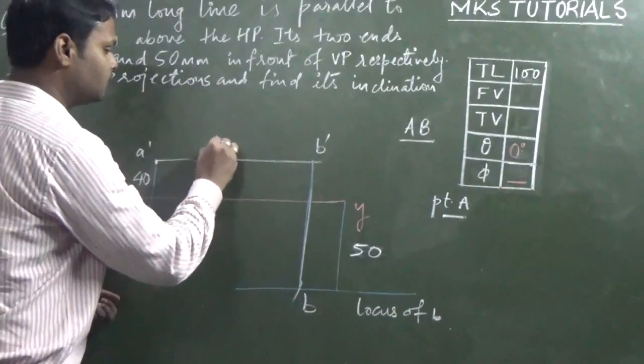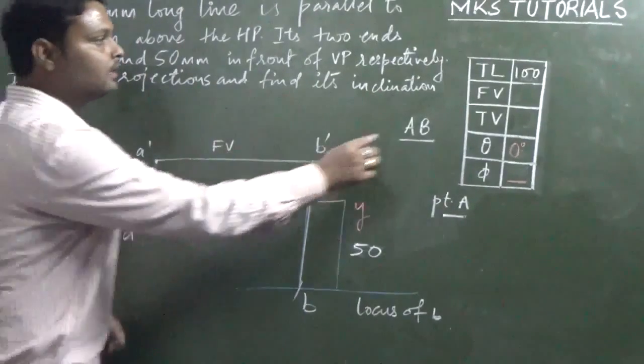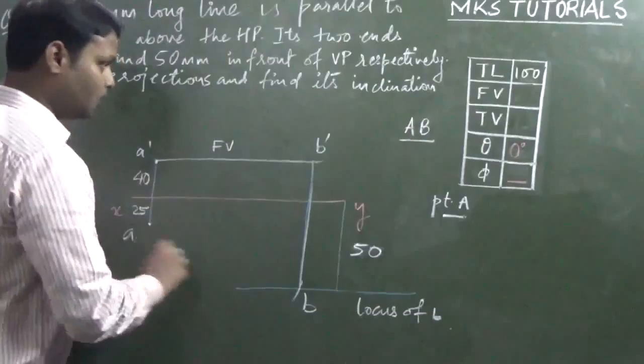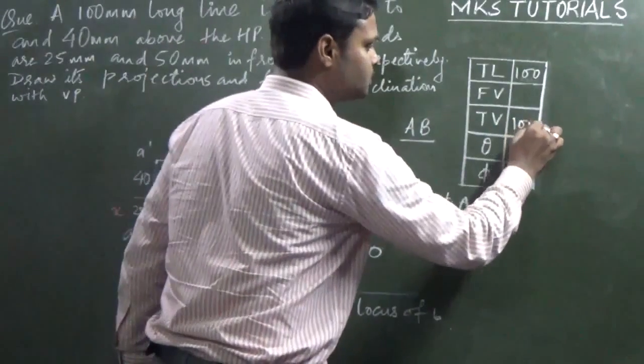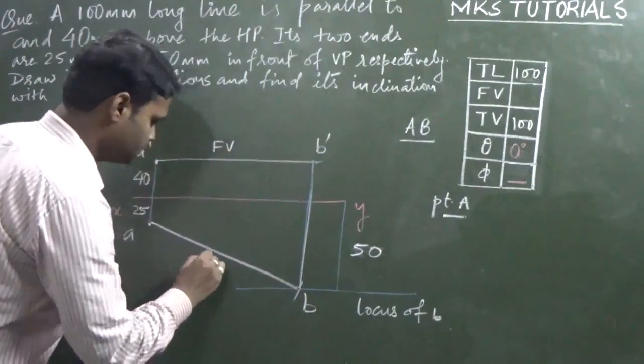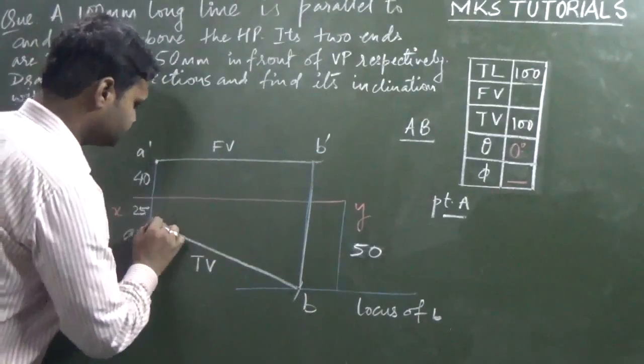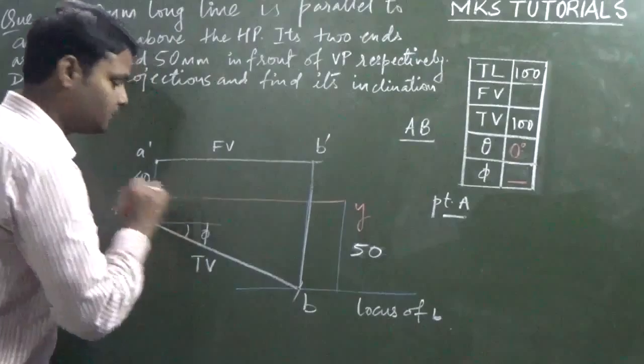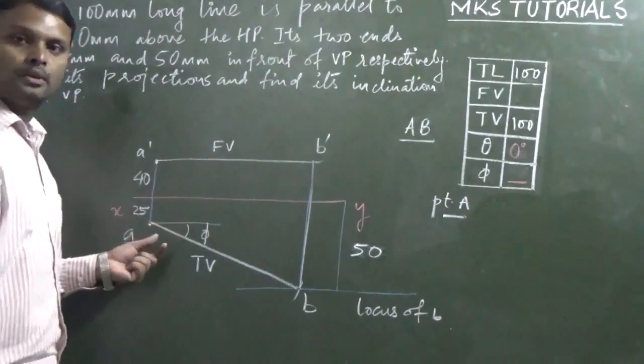If you have B here, then B dash is straight to power. This point is B dash. So from here to here, front view will be measured. Front view length will be measured. Top view will be equal to your true length. So this is top view. This angle will be measured through the protractor.